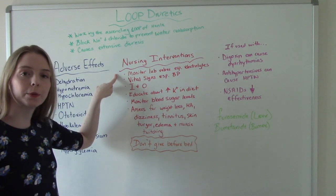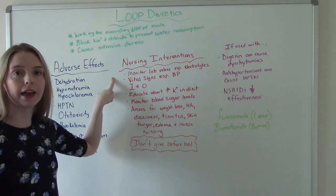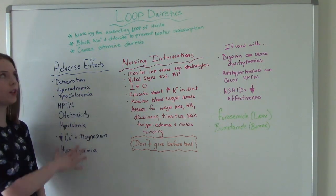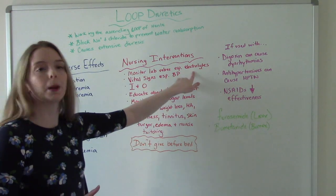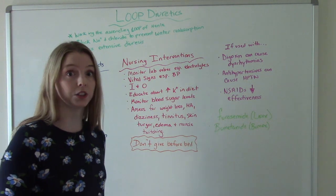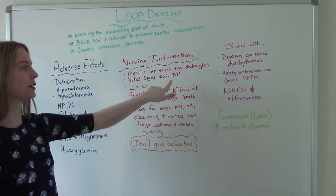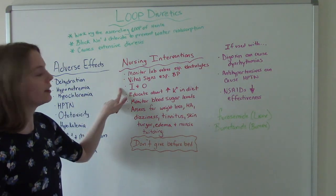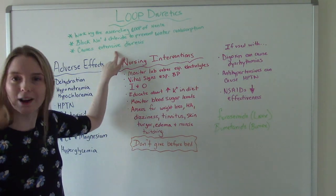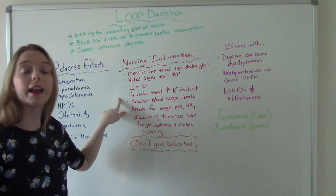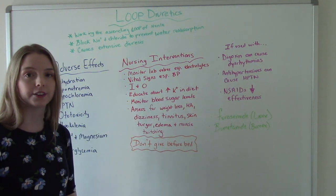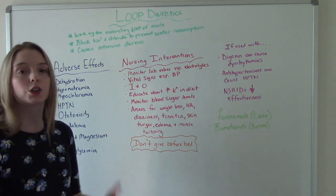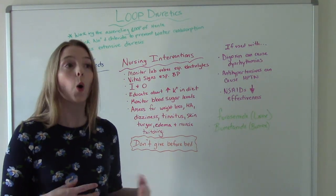Our nursing interventions for people on loop diuretics include monitoring their lab values, especially electrolytes — all the ones we discussed in the adverse effects section. We want to make sure those values are in a safe, normal range. Monitor vital signs, especially blood pressure, because it can cause dangerous hypotension. Monitor their I&O, because of course they'll have lots of output with this medication. We also want to educate them about increasing potassium in their diet, since it causes hypokalemia, or supplement it with medicine if needed.